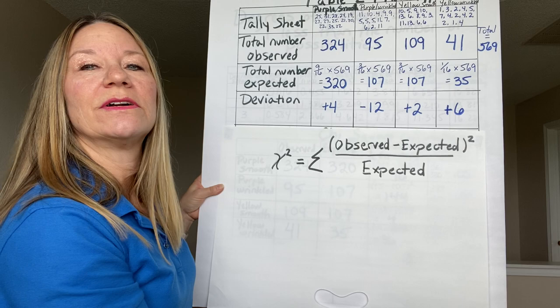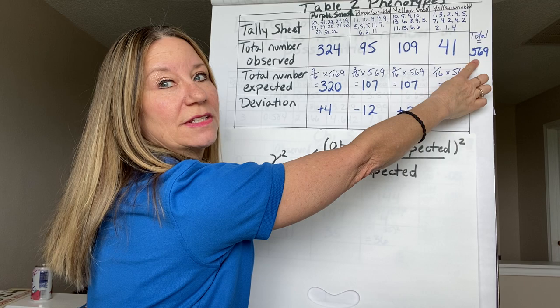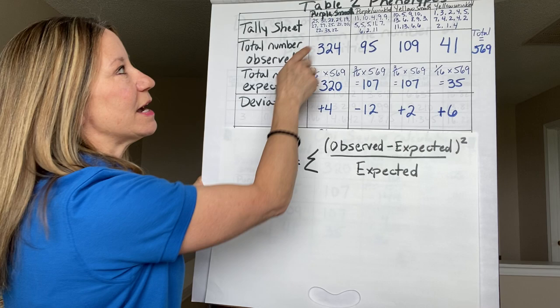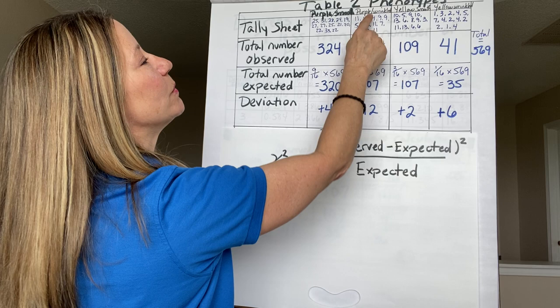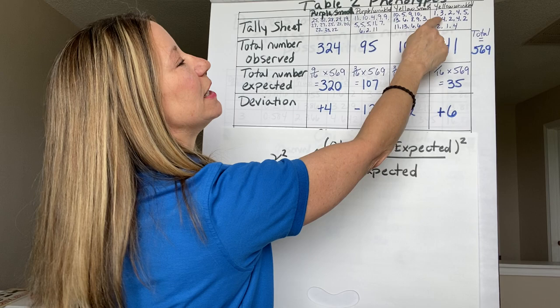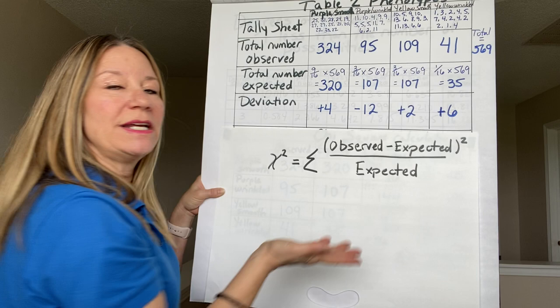Here is the tally sheet. It totals out to 569 kernels on one ear of corn. My tally said there were 324 of the 569 that were purple and smooth, 95 out of 569 were purple and wrinkled, 109 out of 569 were yellow and smooth, and only 41 out of 569 are yellow and wrinkled. These are my total numbers observed.